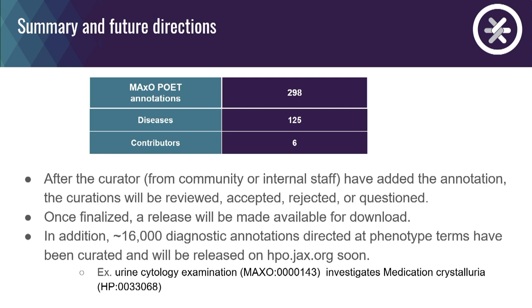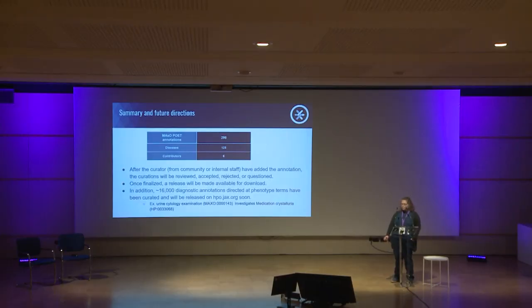In summary and future directions: we're just starting out with 300 annotations in POET currently, representing 125 diseases, primarily focusing on treatments rather than diagnostics. We are beginning to invite the community to annotate, though that is an ongoing process. Once annotations are added, they'll be reviewed, accepted or rejected, or questioned. Once finalized, a release will be made available for download.